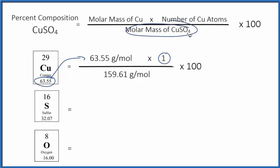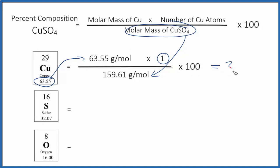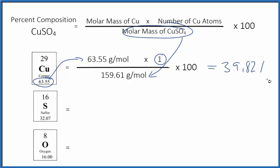and then we divide by the molar mass of copper sulfate. If you need help with that, there's a link at the end of this video. So this is our molar mass for the copper sulfate. So we multiply, then divide, and then we multiply everything by 100, and that'll give us 39.82 percent.